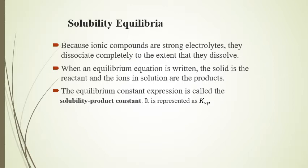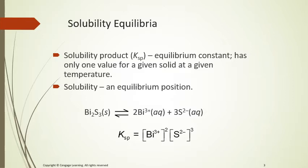When writing an equilibrium equation, the solid substance is the reactant and the ions it dissociates into are the products. The equilibrium constant expression is called the solubility product constant because we multiply the two ions together, and it is represented as Ksp.